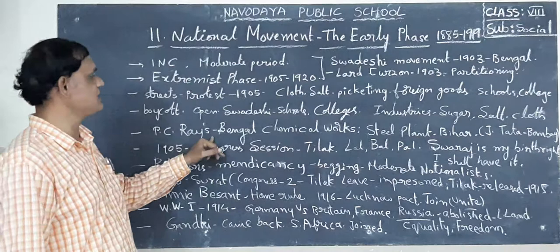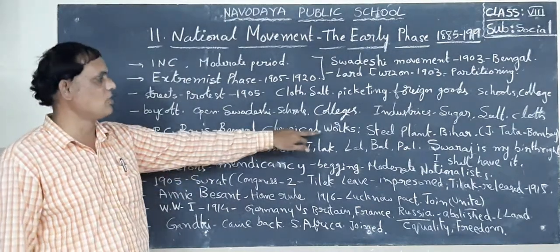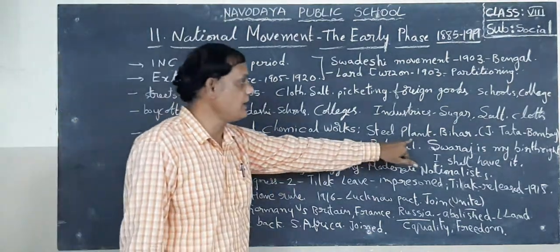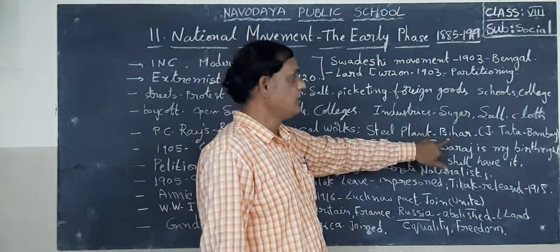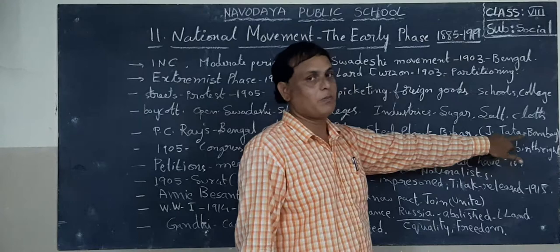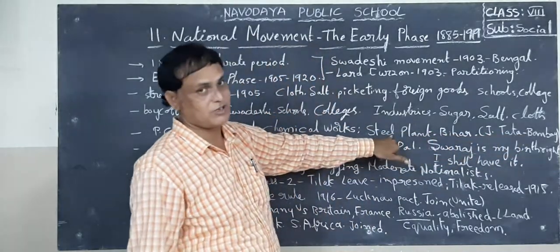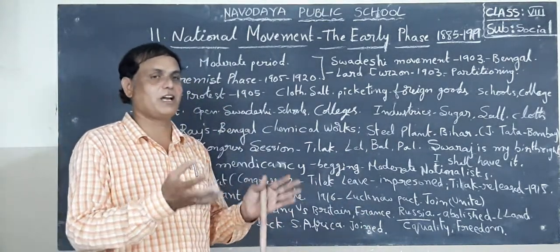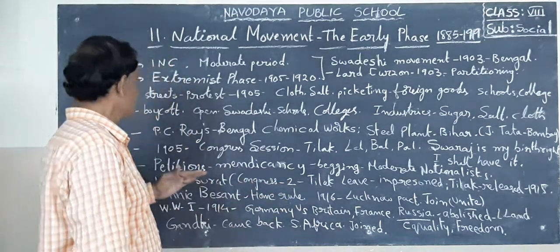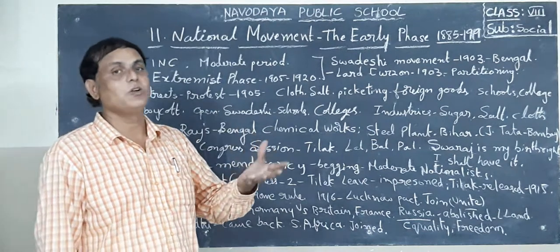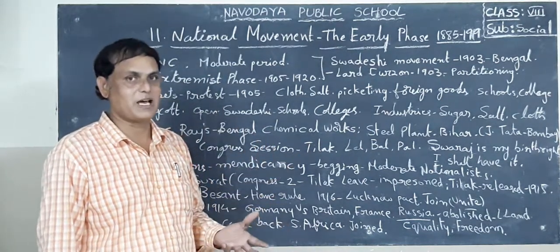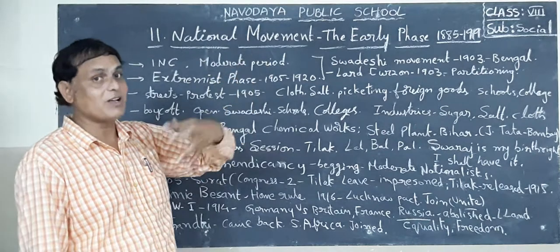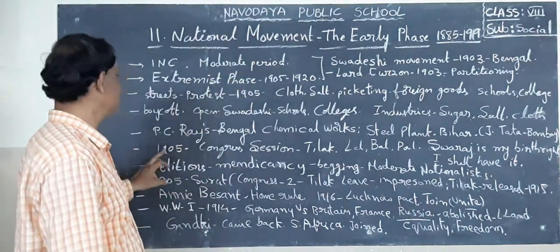For example, P.C. Roy started Bengal Chemical Works - it was started by our Indian people. Next, a steel plant was also started in Bihar by Jamshedji Tata from Bombay. Our Indians slowly started industries in our country and started production. We increased our Swadeshi goods, discouraging the foreign goods, because we were suffering due to the activities of the British government.